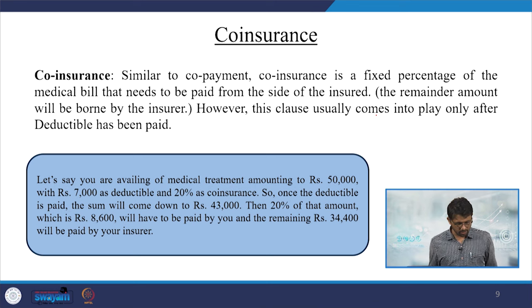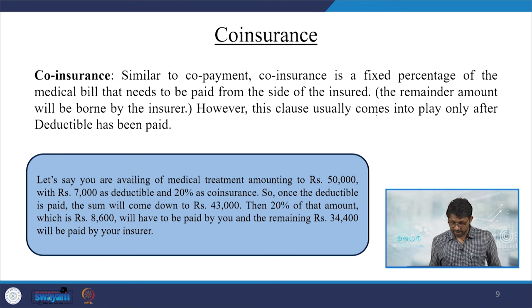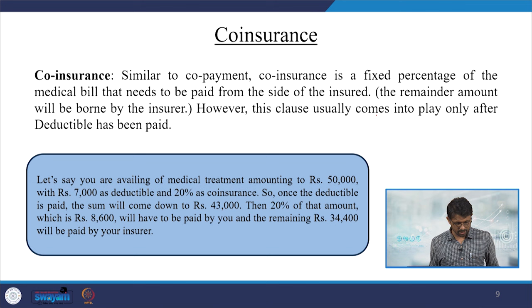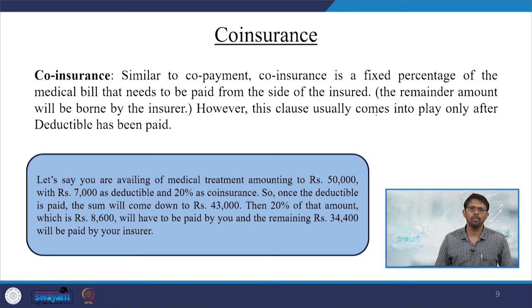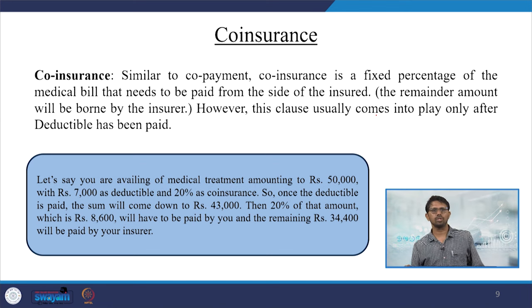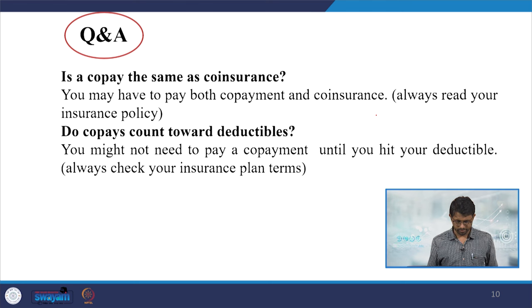Once the deductible is paid, the sum comes down to 43,000 rupees. Then 20 percent of that amount — which is 8,600 rupees — has to be paid by you, and the remaining 34,400 will be paid by the insurer.